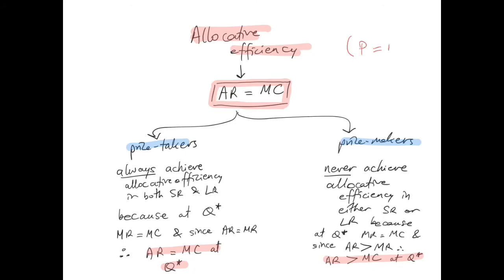Price takers will always achieve allocative efficiency in both the short run and the long run, because they will always produce at a level of output Q* where MR equals MC. And because for a price taker, AR is always equal to MR, therefore AR will always equal MC at Q* — the level of output where the firm maximizes its profit.